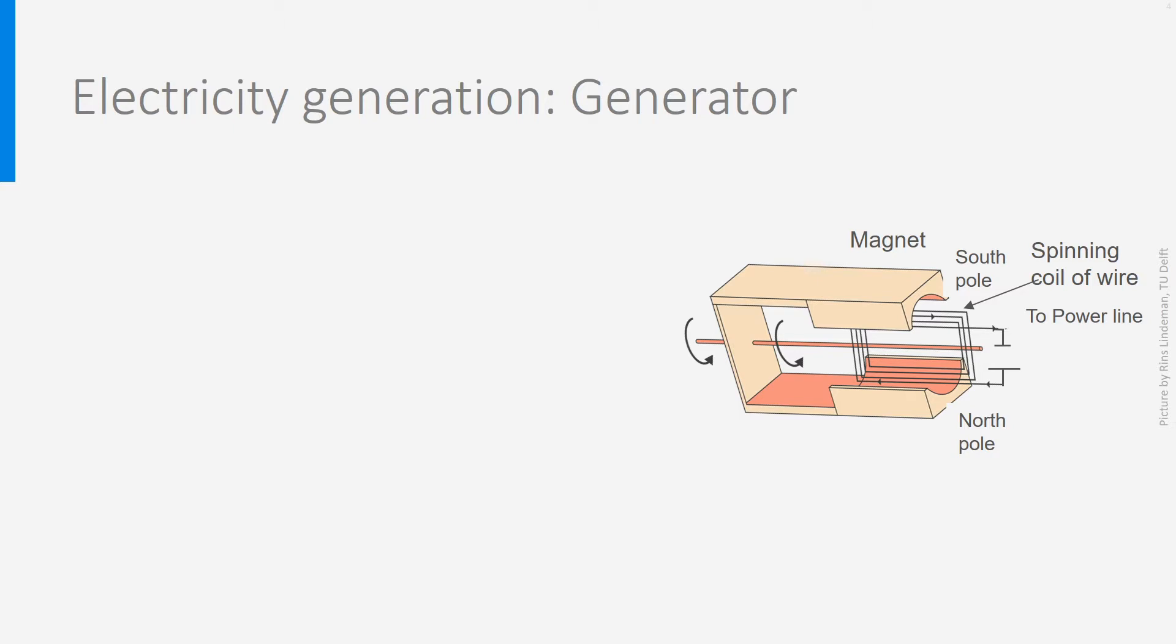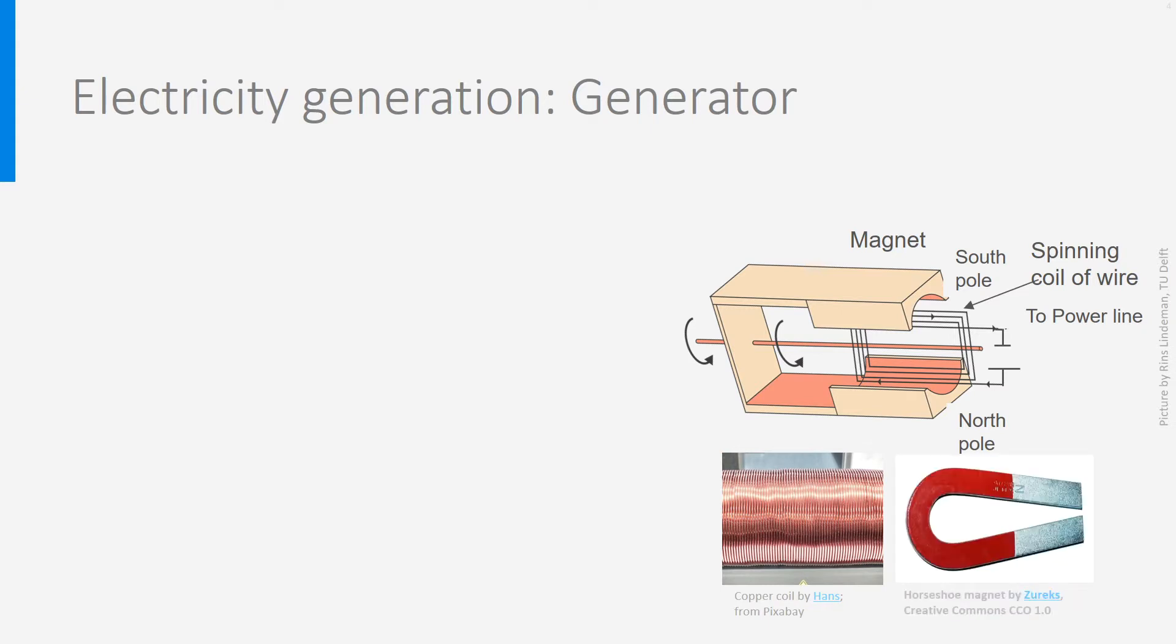First, a wire of conductive material. In power plants, big coils, like in the figure below, are used. Second, you need a magnet like on this picture, but much bigger. A magnet is a ferromagnetic material like iron, nickel or ferrite. These materials produce from themselves, or with some processing, a permanent magnetic field.